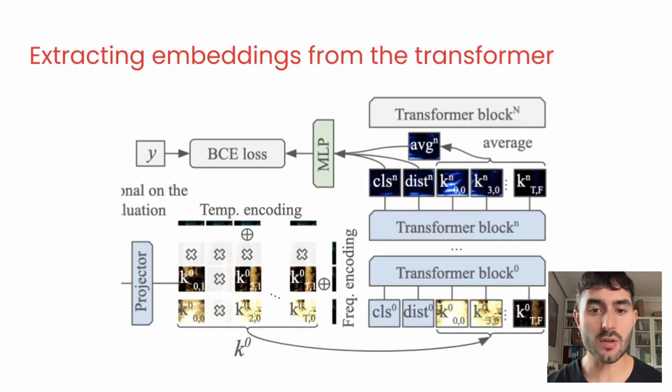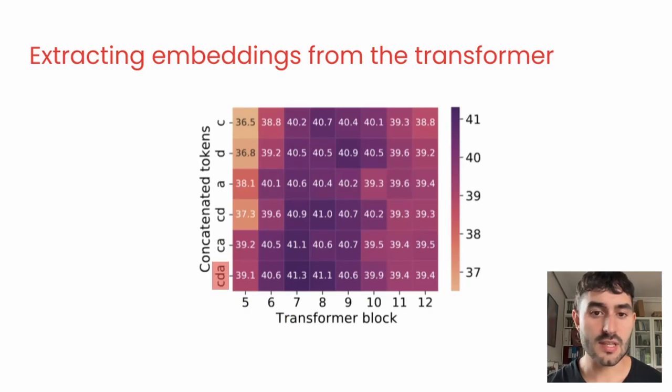In the first experiment, we measure the downstream performance obtained in the MagnaTagATune dataset by different features extracted from the transformer. We consider the classification token, the distillation token, the average of the rest of tokens, and stacks of these features extracted from different blocks and layers of the transformer. We find that the stack of features CDA tends to perform better, and that the optimal block is around the middle of the transformer.